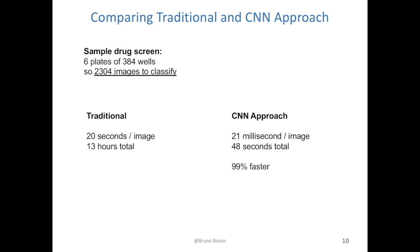With the CNN approach, 16 images were classified in 335 milliseconds, so about 21 milliseconds per image. To classify these same 2000 images, it would take about 48 seconds. And here we're only looking at six plates of drug compounds, but we could theoretically have hundreds of these.